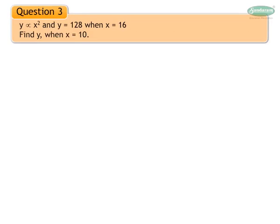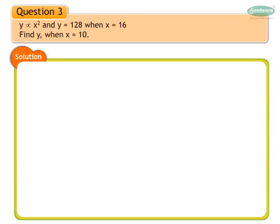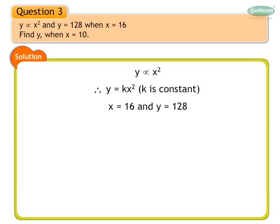Question 3: Y is directly proportional to x square and y is equal to 128 when x is equal to 16. Find y when x is equal to 10. Solution: We first write symbolically y is directly proportional to x square and express y is equal to kx square, where k is constant. Now find k by substituting x as 16 and y as 128. Therefore, 128 is equal to k into 16 square, so k is equal to 128 upon 256, which simplifies to k is equal to one half.